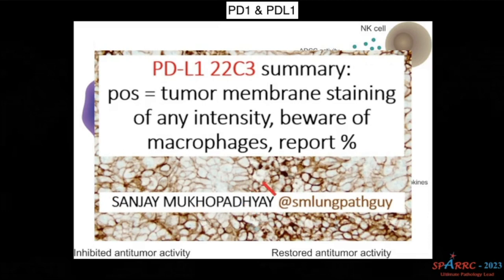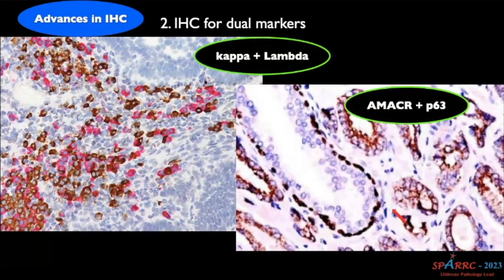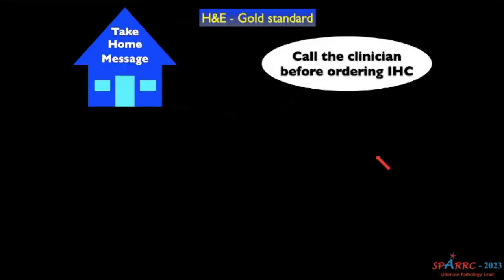One advance is tissue microarray, where you can core tumor samples and create a composite block, allowing many sections to be analyzed together and experimental antibody testing performed. Another advance is dual-marker IHC — for example, kappa and lambda in myeloma, or AMACR and p63 in prostatic carcinoma.